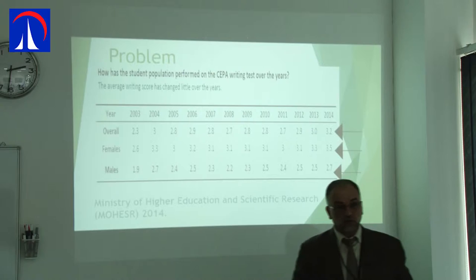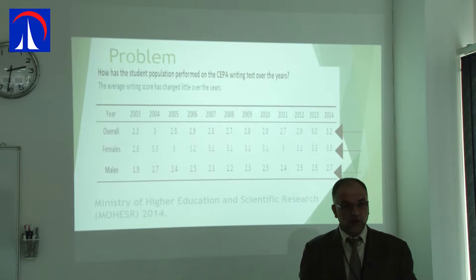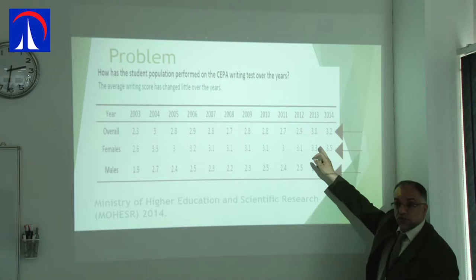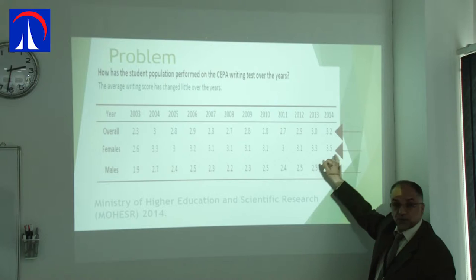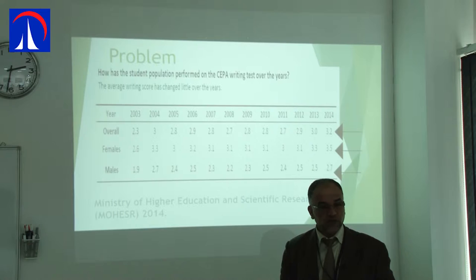In 2014, around 18,000 Emirati grade 12 students from public and private Ministry of Education curriculum schools were assessed. The overall writing score was 3.2 out of six. For females it was 3.5 and for males only 2.7. So this is a real issue — a challenge for the UAE Ministry of Education and universities.